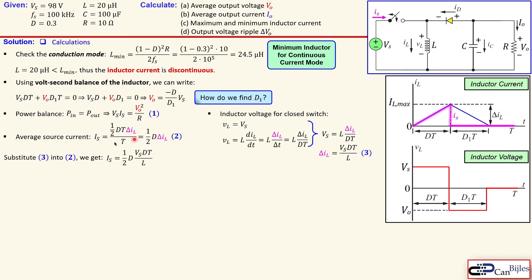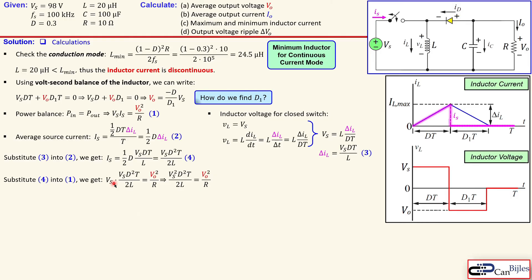We now have an expression involving duty cycle, input voltage, the switching period, and the inductor value. Notice the d-squared term in the expression — this is equation number four. Substituting equation four into equation one gives: Vs times the average current expression equals Vo squared over R. This can be written as Vs squared times d squared times T over 2L equals Vo squared over R. Multiplying both sides by R gives an expression for Vo squared.